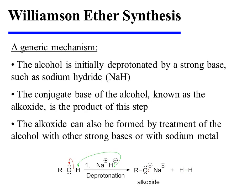The alcohol is initially deprotonated by a strong base, such as sodium hydride. The conjugate base of the alcohol, known as the alkoxide, is the product of this step. The alkoxide can also be formed by treatment of the alcohol with other strong bases or with sodium metal.